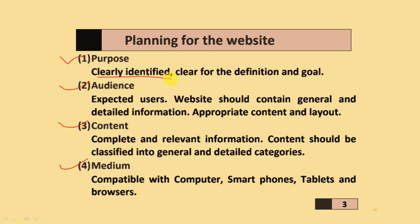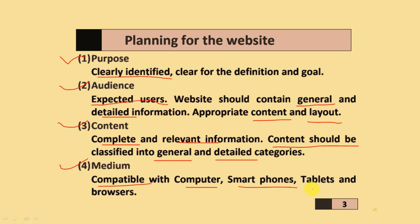Purpose means clearly identified definition and goal. Audience refers to expected users — the website should contain general as well as detailed information, appropriate content, and proper layout. Content should be complete, relevant, and classified into general and detailed categories. Medium means compatibility with computers, smartphones, tablets, and different web browsers.